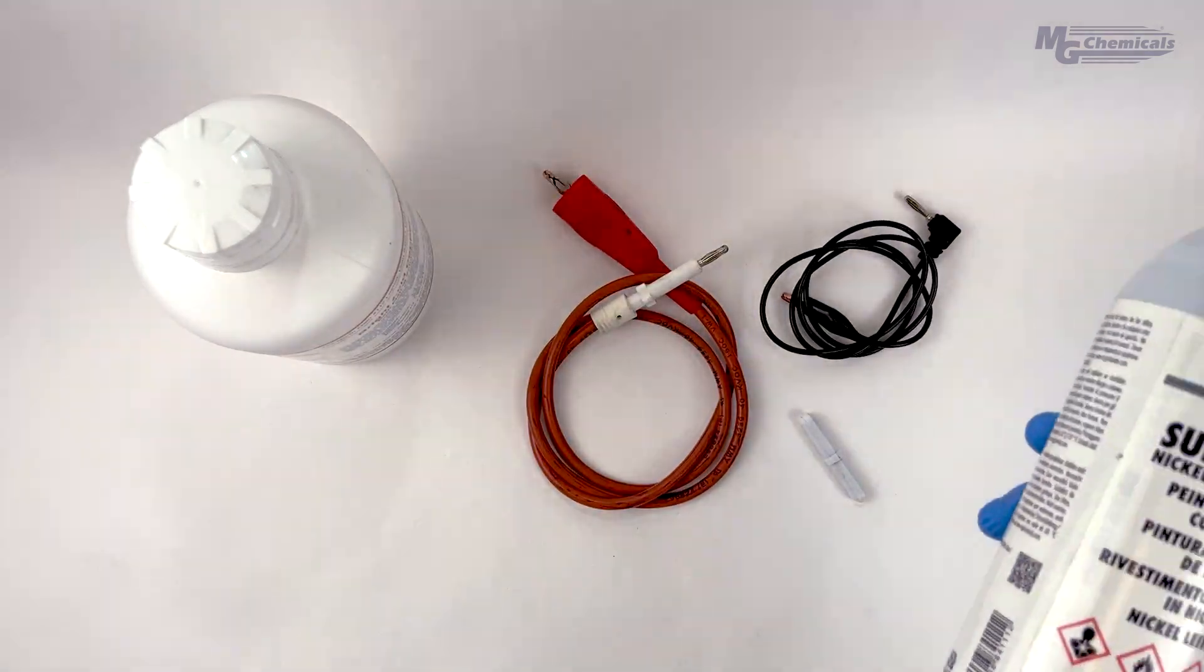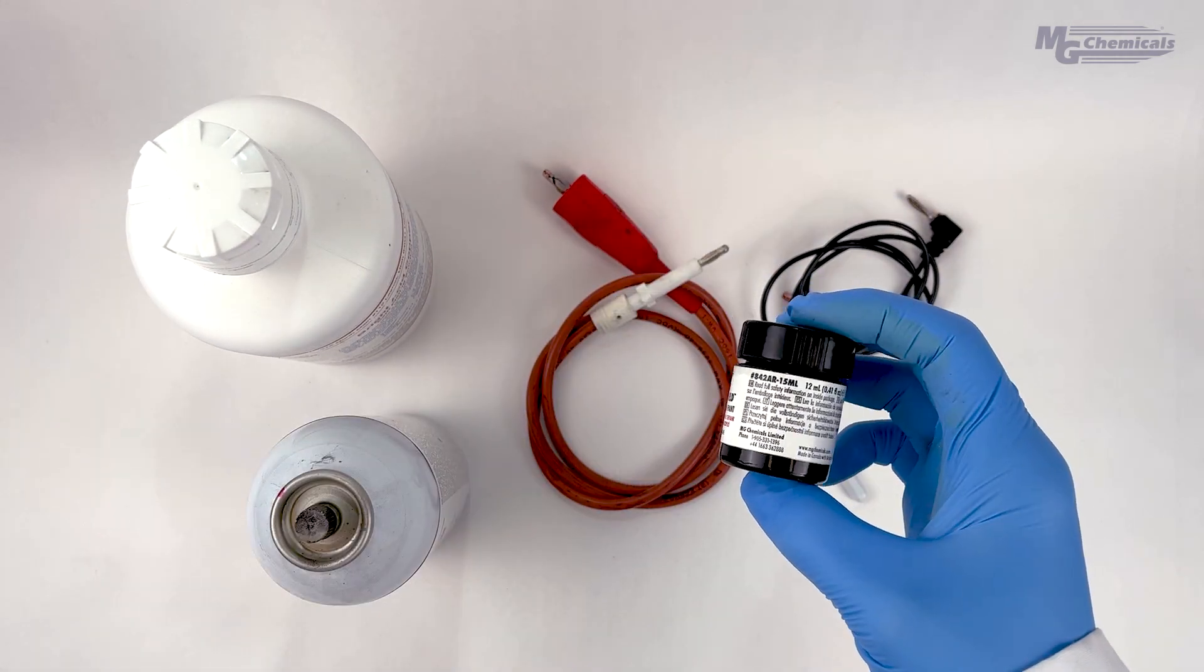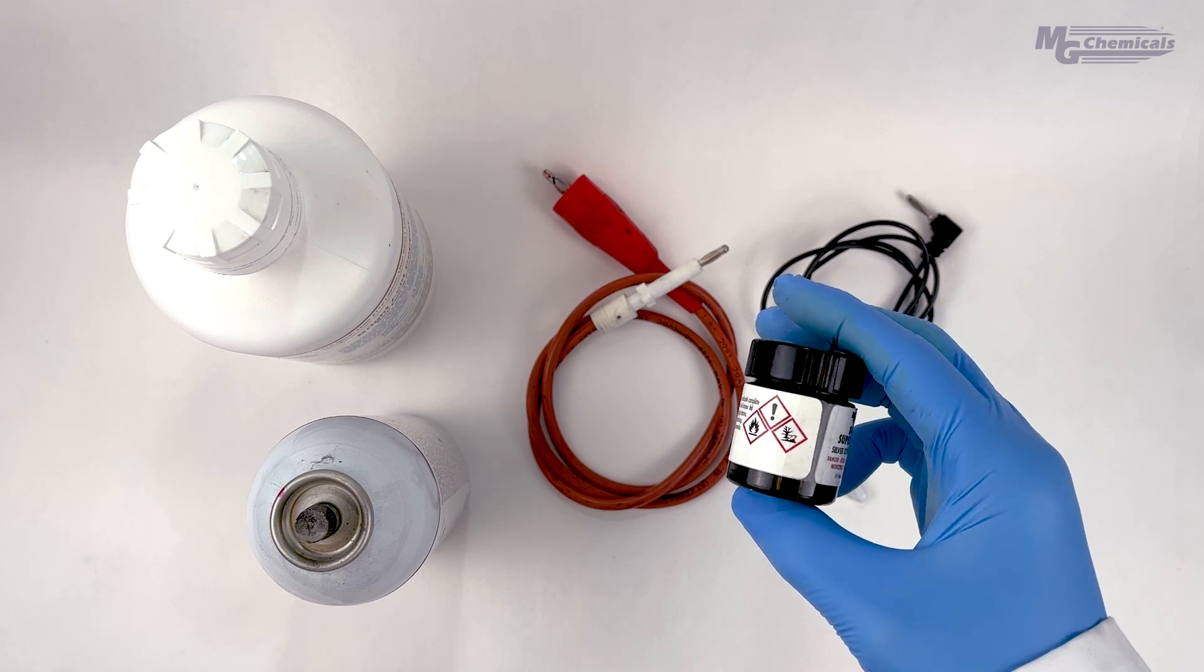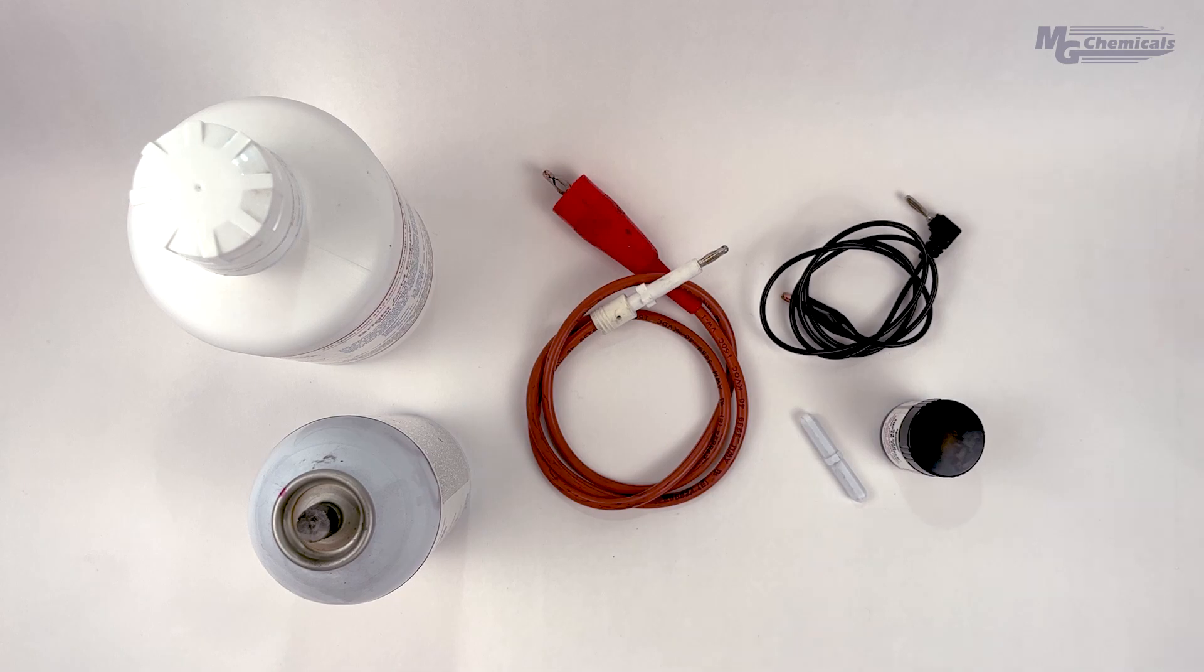The cathode or substrate that's being plated needs to be made electrically conductive in order for there to be electrical potential between the anode and the cathode. We will coat the parts with our 841AR nickel conductive coating.